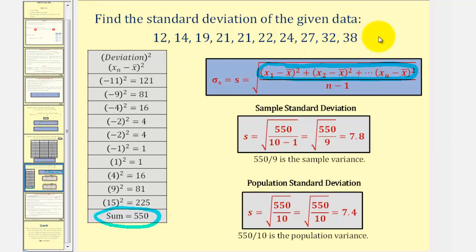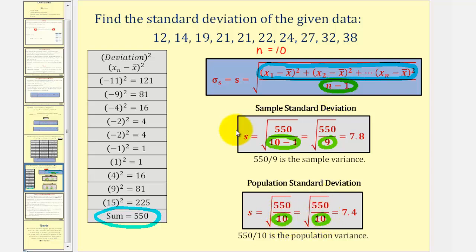Because we have 10 data values, n equals 10. For the sample standard deviation, n minus 1 equals 9. For the population standard deviation, we divide by n, which is 10. So the sample standard deviation is the square root of 550 divided by 9, which is approximately 7.8 — the value before taking the square root is called the sample variance. For the population standard deviation, 550 divided by 10 equals 55, which is the population variance, giving a population standard deviation of approximately 7.4. The units on both are miles per gallon, the same as the original data.